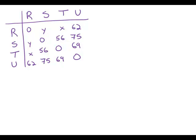The table above shows the distance in kilometers by the most direct route between any two of the four cities R, S, T, and U. For example, the distance between city R and city U is 62 kilometers. What is the value of X?